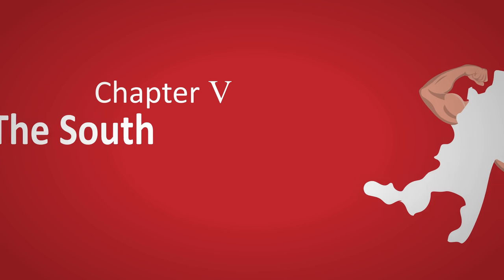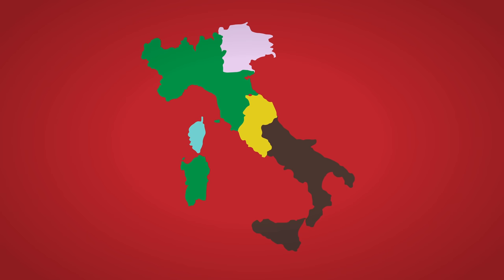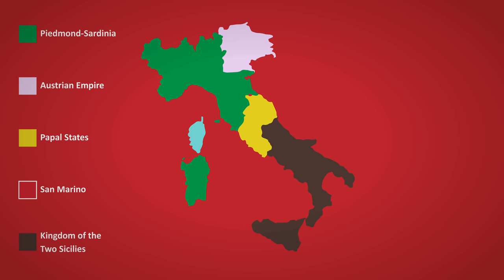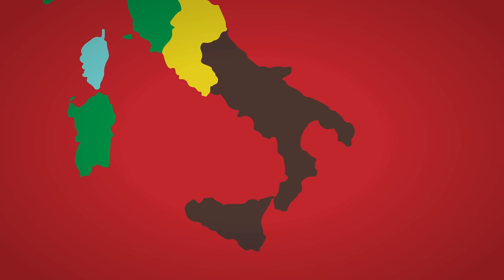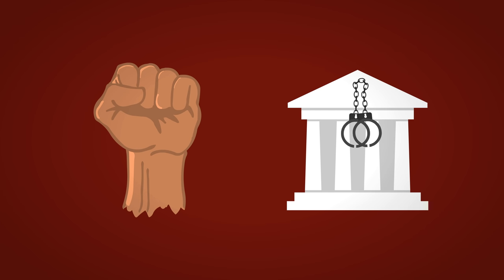Chapter 5: The South. There were just five countries left in Italy: Piedmont Sardinia and their puppet states in the northwest, the Austrians in the northeast, the Papal States in the middle, San Marino, and the Kingdom of Two Sicilies in the south. The Kingdom of Two Sicilies was the next target — the most powerful country in Italy, with the largest army, economy, and population. But this large population was rebellious, and the government had created a police state to prevent revolts.